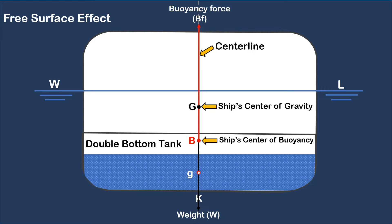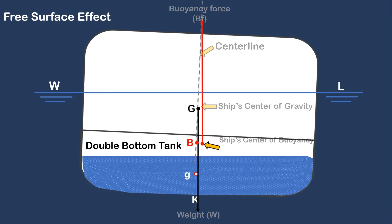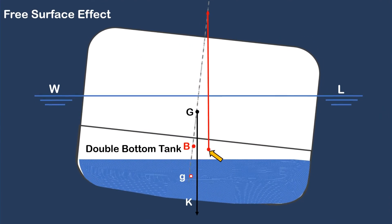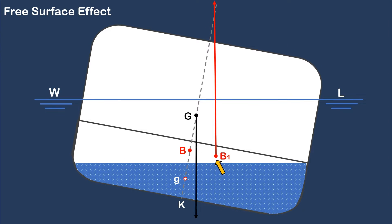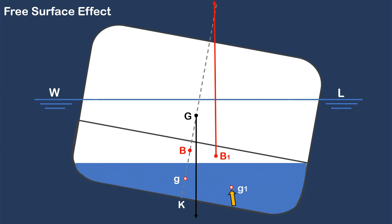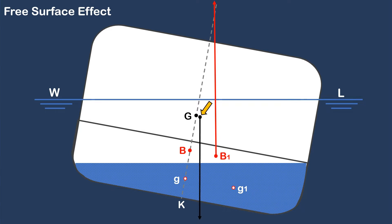When a ship tilts or rolls, the ship's center of buoyancy, capital B, moves to some point at the low side, B1. The liquid within a partially filled tank also tends to move to the lower side, causing a shift of the center of gravity of water inside the tank. As small g moves, the vessel's center of gravity, capital G, also moves parallel to the movement of small g.